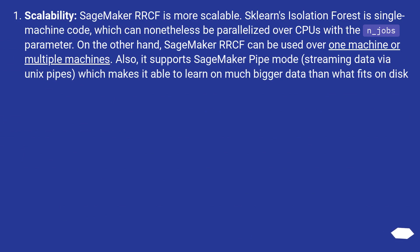Scalability: SageMaker RRCF is more scalable. Scikit-learn's Isolation Forest is single-machine code, which can nonetheless be parallelized over CPUs with the n_jobs parameter. On the other hand, SageMaker RRCF can be used over one machine or multiple machines. Also, it supports SageMaker pipe mode, streaming data via Unix pipes, which makes it able to learn on much bigger data than what fits on disk.